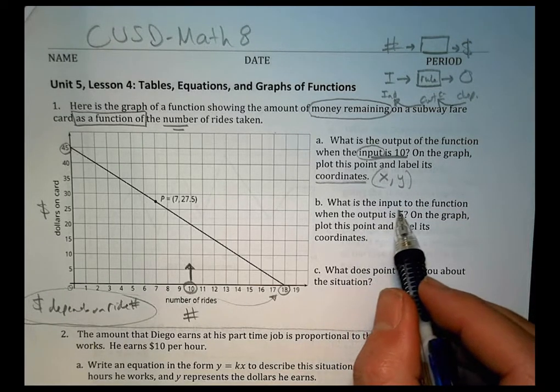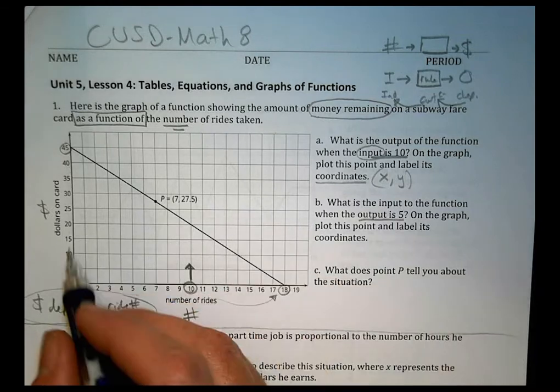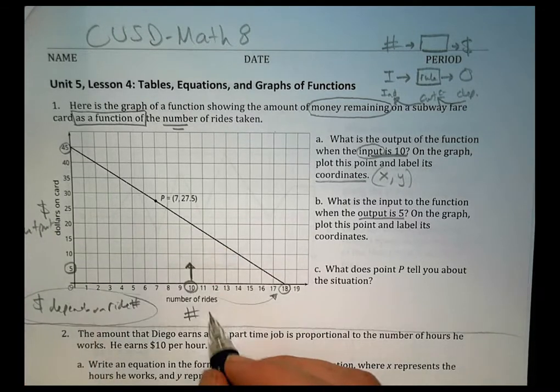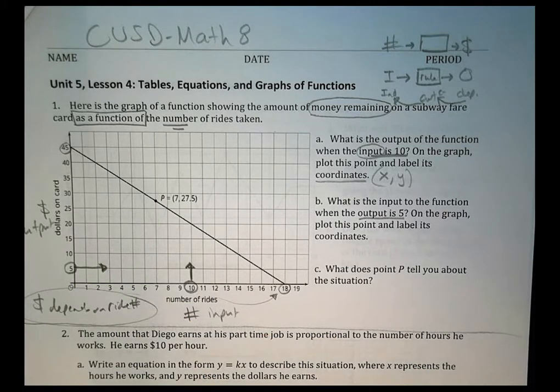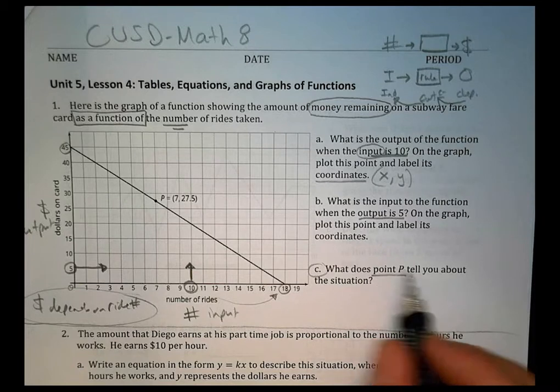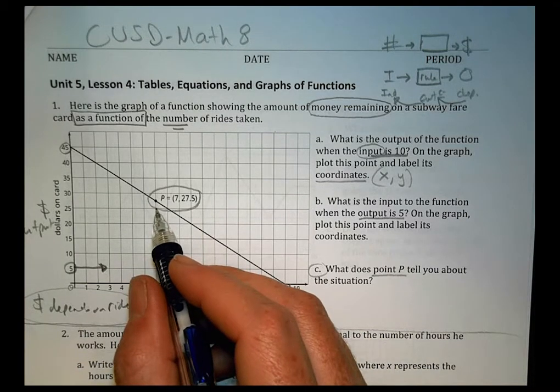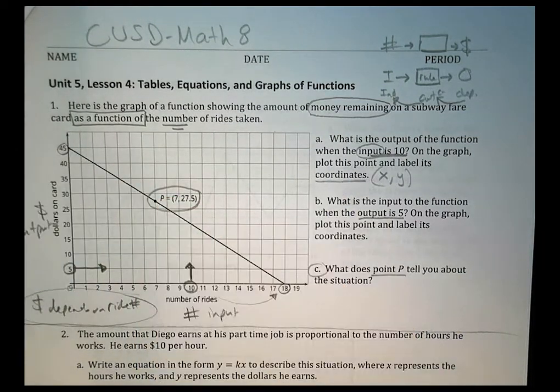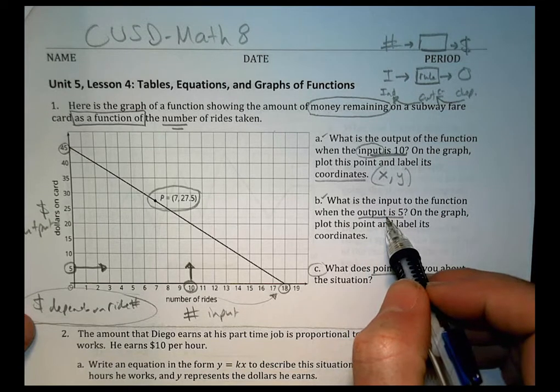So our input here is 10. So our input that we're going to look for is going to be in the ride section. So we're going to want to look at 10 and see what happens to our dollar amount when we have 10 rides. That's what we're looking for there, and we're looking for a coordinate. Remember, a coordinate is an x, y value. Question B says, what is the input to the function when the output is 5? The output is going to be over here. That's our money amount. So we're going to look for the output being 5.